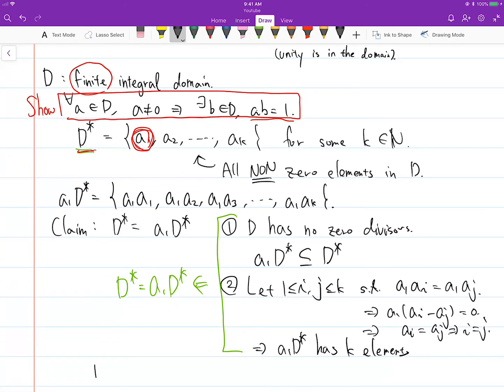D star was the set of all non-zero elements in D. So what that means is unity has to be in it, because we're using the definition where a ring has to have unity. Then we have A1 D star—we know that these two are the same thing. And unity, the element one, is in D star, so it has to be in A1 D star as well.